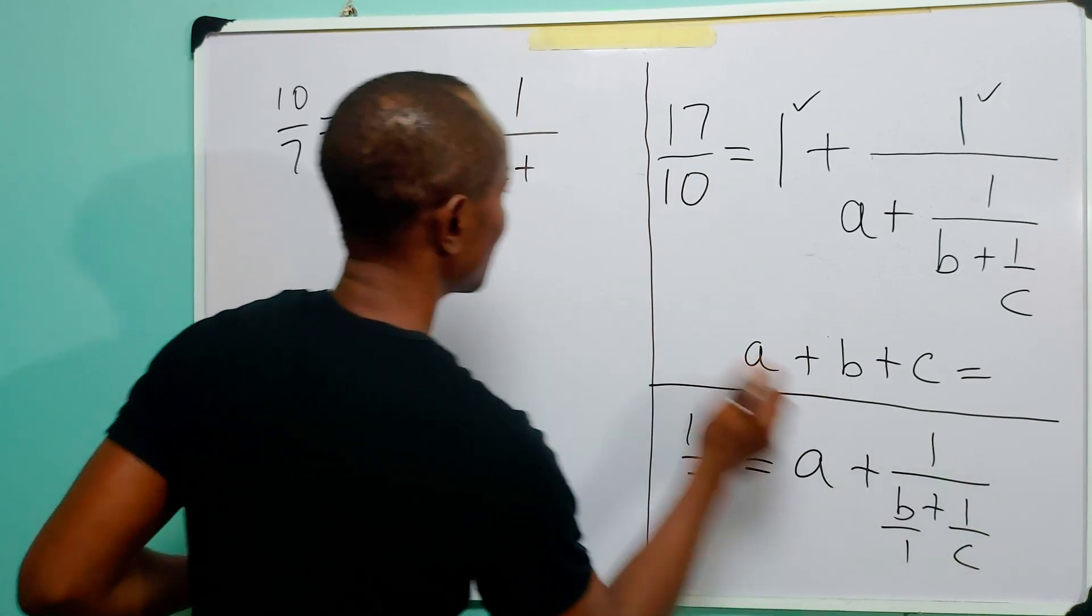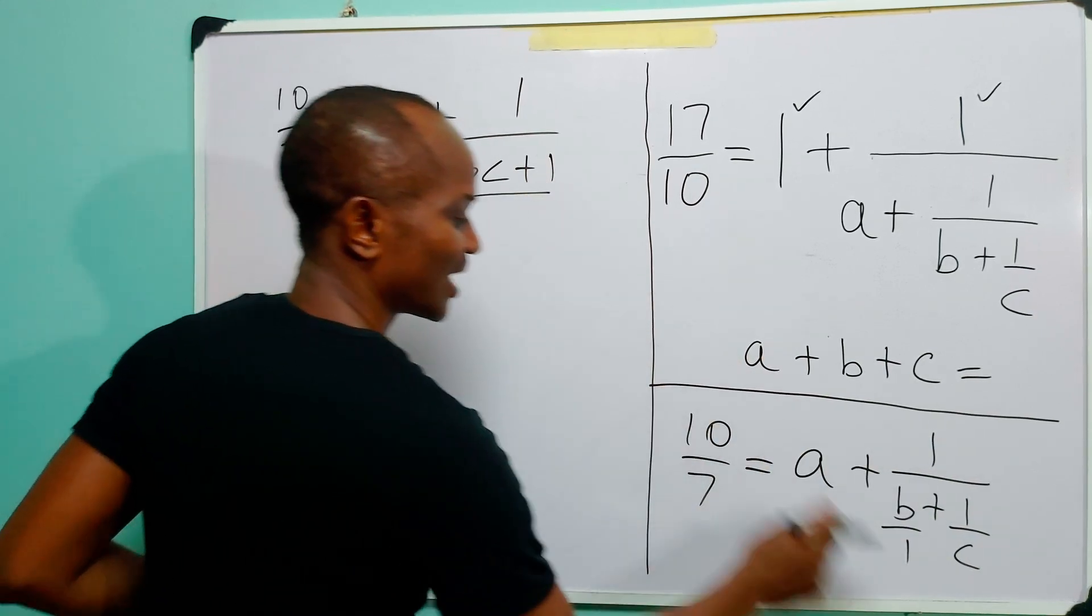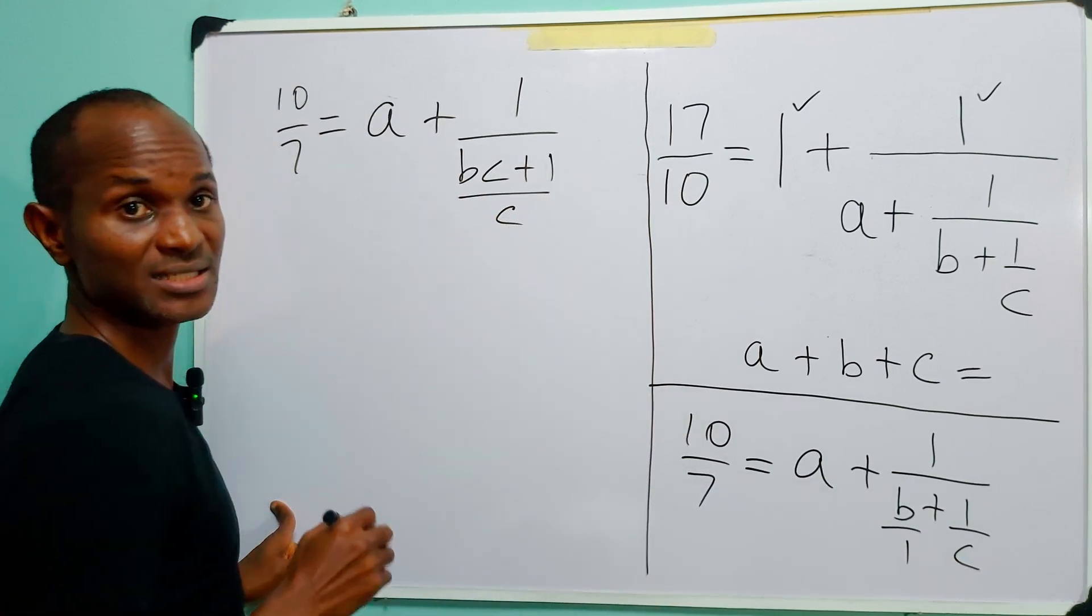...which is BC, plus 1, divided by 1 times C, which is C.